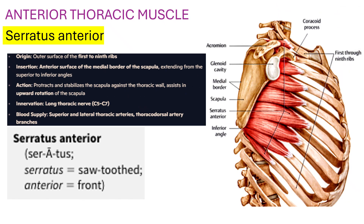Serratus anterior: the origin of Serratus anterior is the outer surface of the first to the ninth ribs, as you can see here — these are all Serratus anterior.